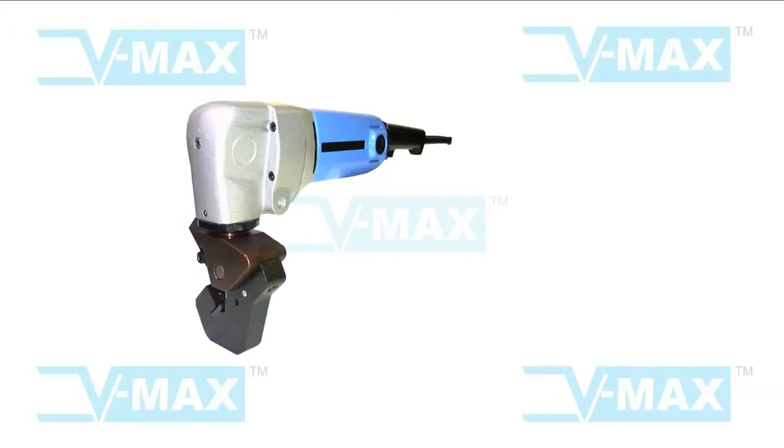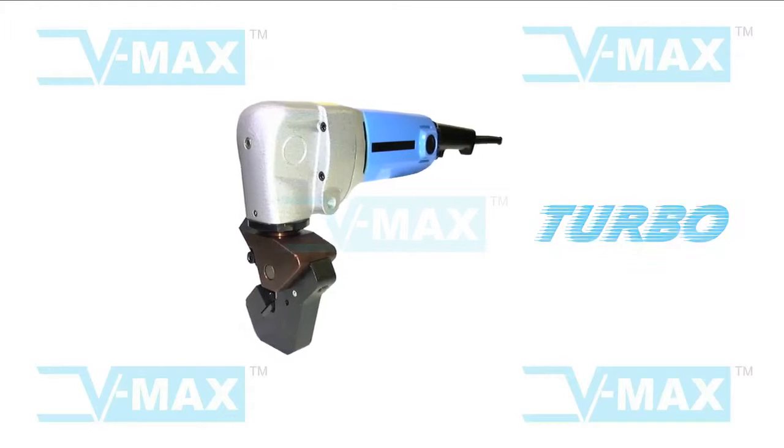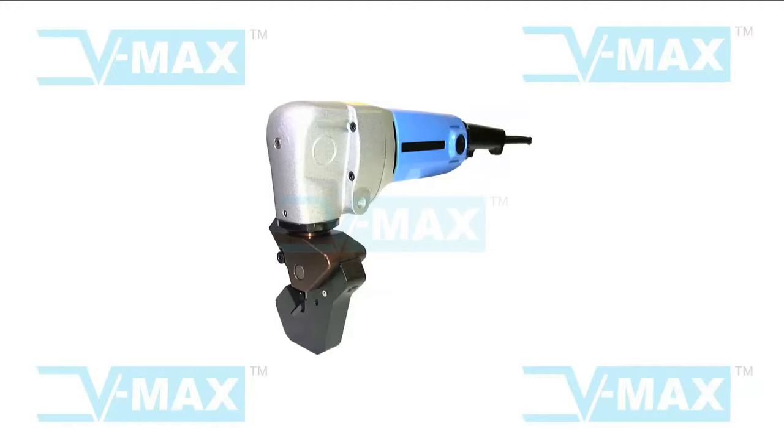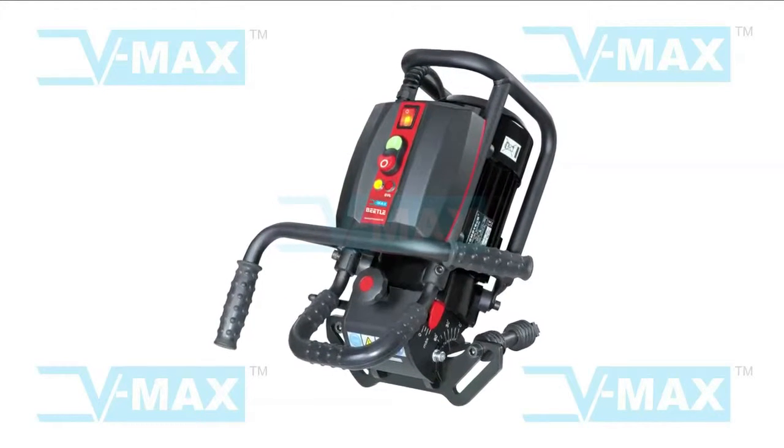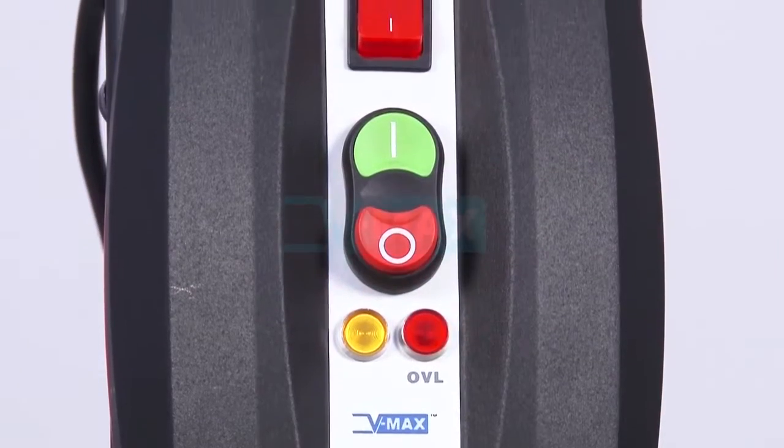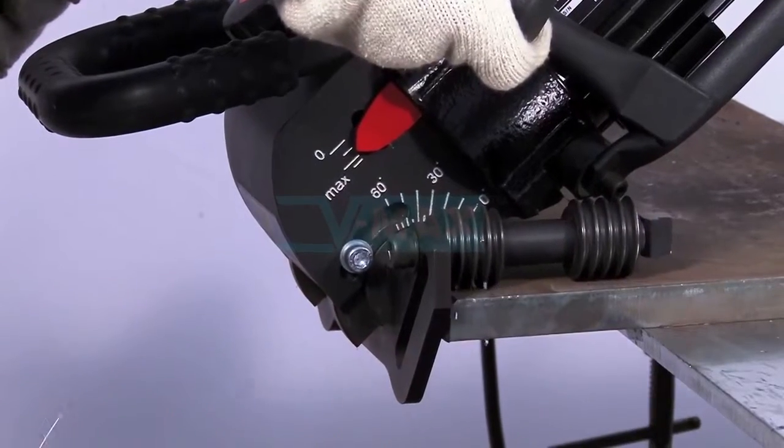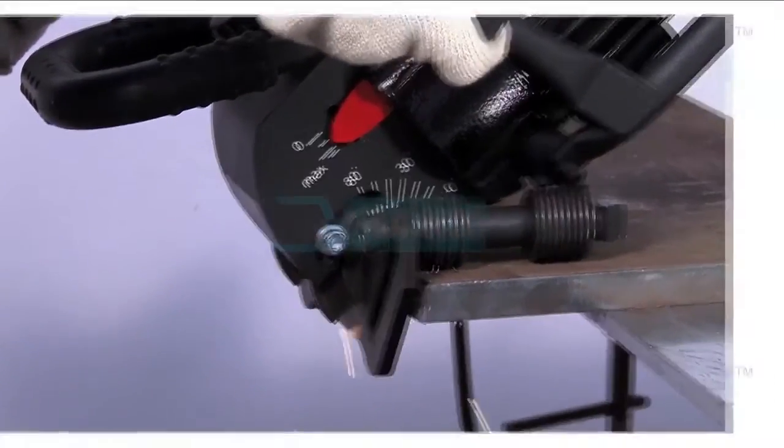VMAX has also introduced the turbo plate edge beveling machine with punching movement. Beetle, new generation portable beveling machine from VMAX, is one of the most versatile machines for machining plates and pipes prior to welding.